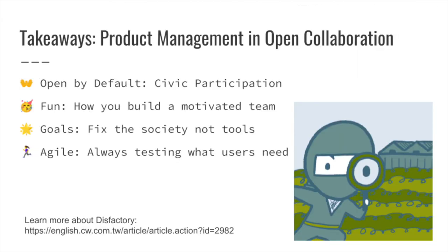To wrap up, there are four takeaways. First, open by default — if you want to build something for civic participation, then your project itself should be civic participation. Second, keep it fun — that's how you build a motivated team. Third, always keep an eye on your goals because you are here to fix the society, not just the website. Last but not least, stay agile — always test what users need before you start building something huge; that's a hard lesson I learned from my last failure. I'm very happy to share my experience today, and I hope this brings more discussion about product management and open collaboration in civic tech — because that's how we can build civic tech that is truly of the people, by the people, for the people. Thank you very much.